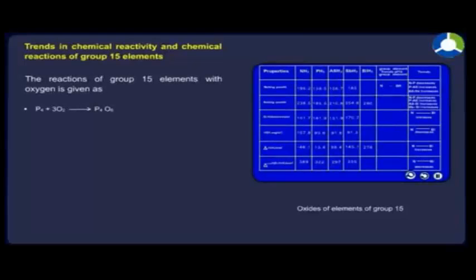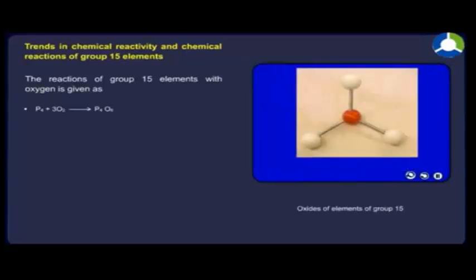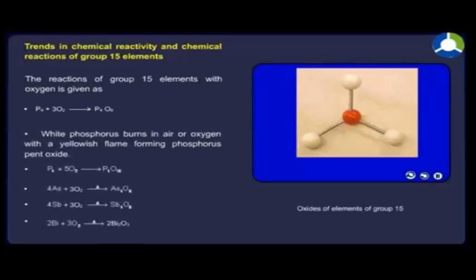The reactions of group 15 elements with oxygen are given as: P₄ reacts with 3O₂ to give P₄O₆. White phosphorus burns in air or oxygen with a yellowish flame forming phosphorus pentoxide. P₄ reacts with 5O₂ to give P₄O₁₀ on heating. 4As reacts with 3O₂ to give As₄O₆ on heating. 4Sb reacts with 3O₂ to give Sb₄O₆ on heating. 2Bi reacts with 3O₂ to give 2Bi₂O₃.